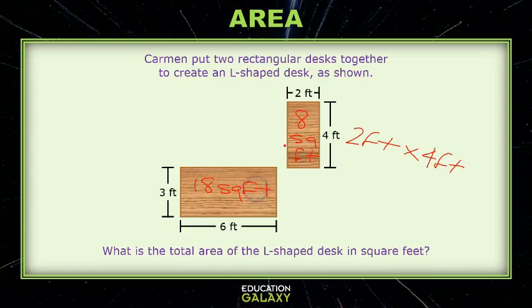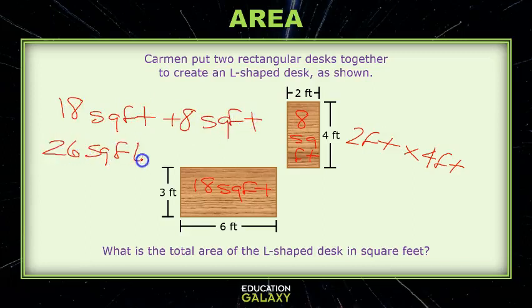Okay so now I have the desktop areas for both desks, so how am I going to find a total? Well like we usually do we can add to find this total, so 18 square feet plus eight square feet gives me a total of 26 square feet. Excellent job area experts, now it's your turn.